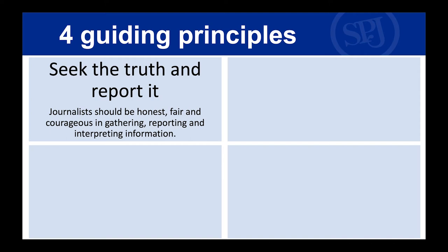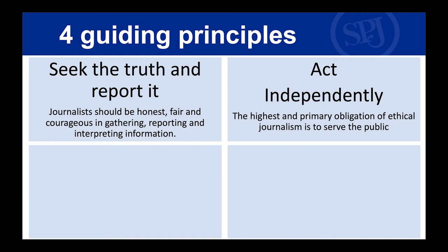Seek the truth and report it: journalists should be honest, fair, and courageous in gathering, reporting, and interpreting information. Seeking the truth is one of the most important things we do. Act independently: the highest and primary obligation of ethical journalism is to serve the public. We're not serving any one interest — we're serving the public, so we act independently.